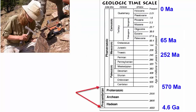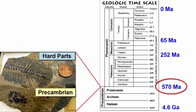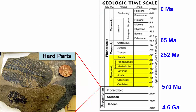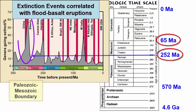According to this timescale, the first 4 billion years of Earth's history is collectively known as the Precambrian — the boundary is set at the oldest fossil evidence of organisms with hard parts. After hard parts were developed by living organisms, it was easier to preserve them as fossils, providing much more evidence to differentiate events and environments in Earth's history, especially extinction events. The Paleozoic (Old), Mesozoic (Middle), and Cenozoic (Recent) are each separated by major extinction events.